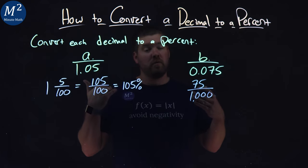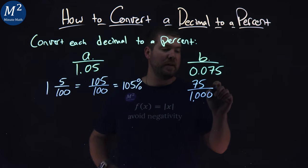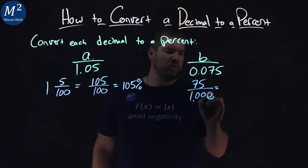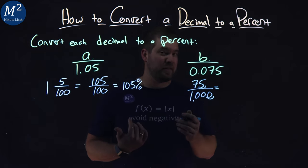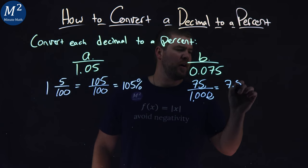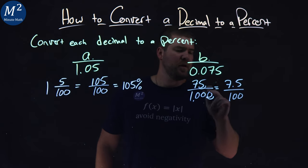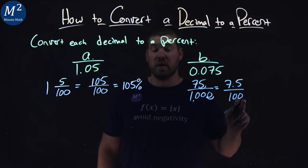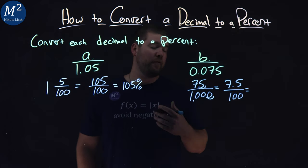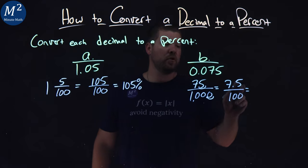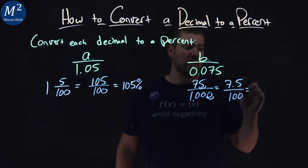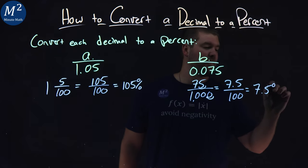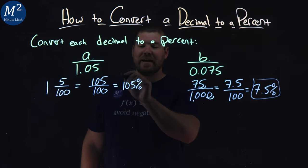75 over 1,000, if we can convert this to be over 100, we know we can easily get the percent. So if we just move this decimal place over 1, or divide both numerator and denominator by 10, we'll get the same effect. And we'll get 7.5 over 100. So 75 over 1,000 is the same thing as 7.5 over 100. And when we know about fractions, when they're over 100, the numerator is the decimal value. So we have 7.5 percent as my answer.